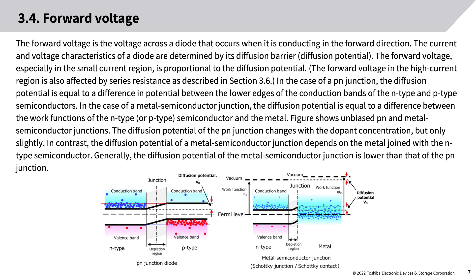In the case of a PN junction, the diffusion potential equals the difference in potential between the lower edges of the conduction bands of the N-type and P-type semiconductors. In the case of a metal-semiconductor junction, the diffusion potential equals the difference between the work functions of the N-type or P-type semiconductor and the metal.